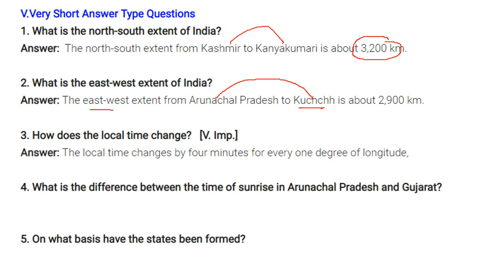How does local time change? The local time changes by four minutes for every one degree of longitude. So one degree of longitude equals four minutes.